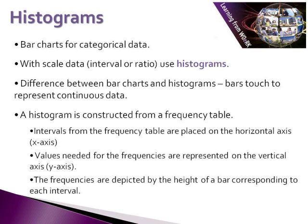We construct a histogram from a frequency table. We start off by using the intervals from our frequency table — so for example our age in years — and we place those on our horizontal or x-axis. Our values needed for the frequencies are represented on the vertical axis or y-axis. The frequencies of each of these are depicted by the height of the bar, which corresponds to each interval.